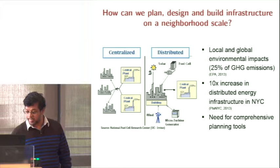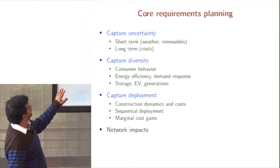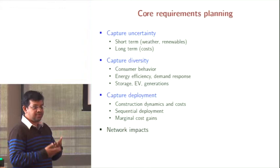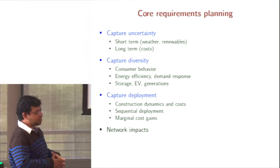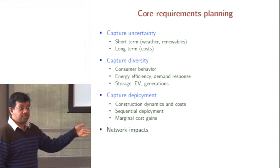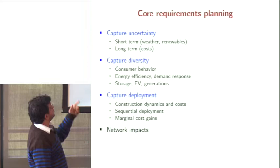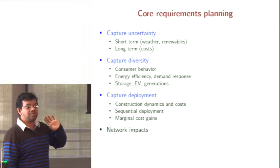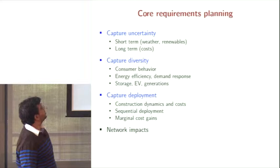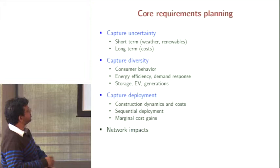These are the core requirements we identified. First, we need to capture uncertainty — there are two types: short-term uncertainty due to weather, loads, and renewables in day-to-day operations; and long-term uncertainty regarding costs, for example natural gas prices may be low today and high tomorrow. Second, we need to capture diversity in the load side, which is not typically accounted for in traditional planning. Diversity is completely ignored — loads are treated as static — but we have consumer behavior, energy efficiency, demand response, storage, and electric vehicles.